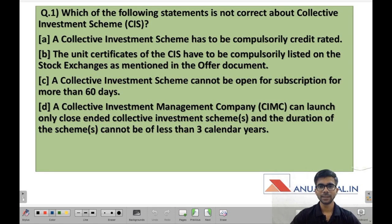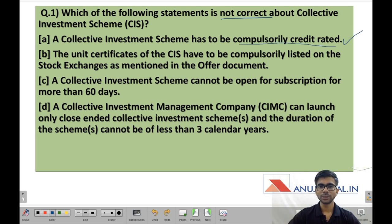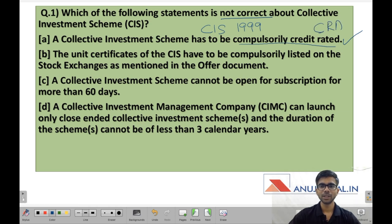Which of the following statements is not correct about collective investment scheme? You are given 4 statements and you have to see which of these is incorrect. Statement 1: a collective investment scheme has to be compulsorily credit rated. This statement is right because as per Collective Investment Scheme Regulations 1999, a CIS has to be compulsorily credit rated by a credit rating agency. So statement 1 is right.